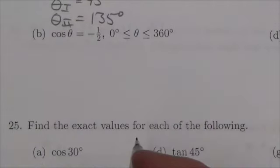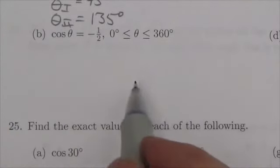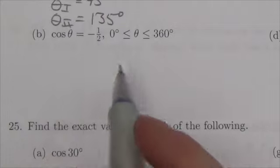Hi everyone, this is the Math 20-1 Trigonometry Review question 24b. I just got to solve this equation here in the given domain. Here cosine is equal to negative one-half.